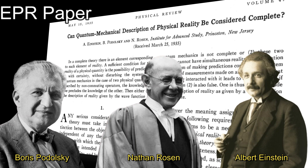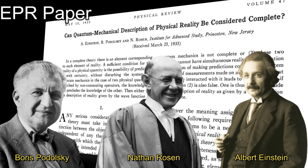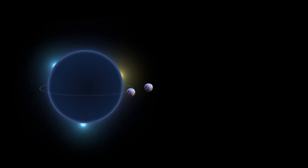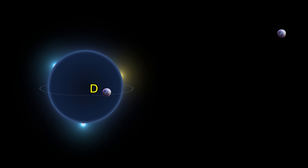The EPR equals ER idea establishes a link between quantum entanglement and wormholes. After Suskind's paper on black hole complementarity, people found some problems with this proposal. If a particle-antiparticle pair is produced near a black hole, one of these particles can go into the black hole — let's call it D — and the other one can fly off to a large distance — let's call it A. This is how Hawking radiation is produced.